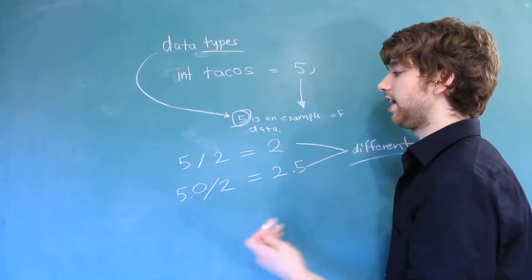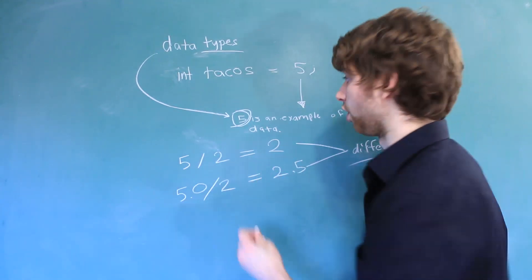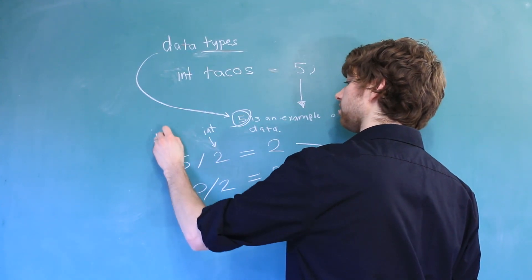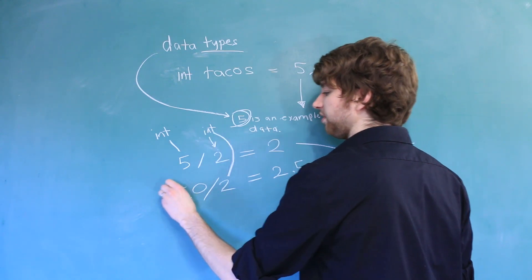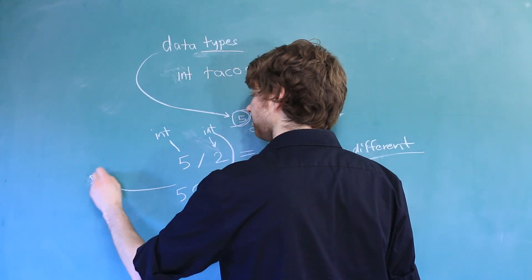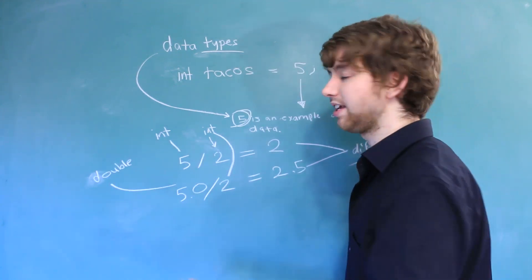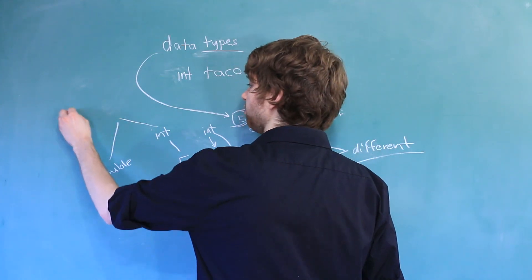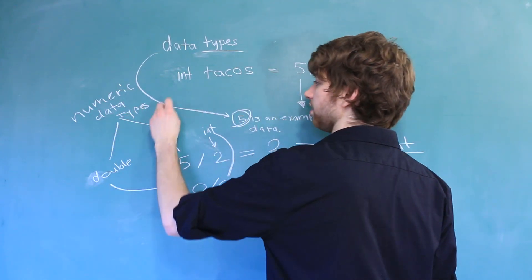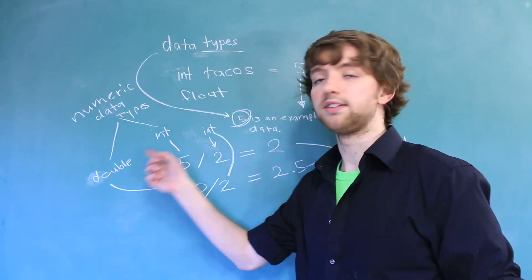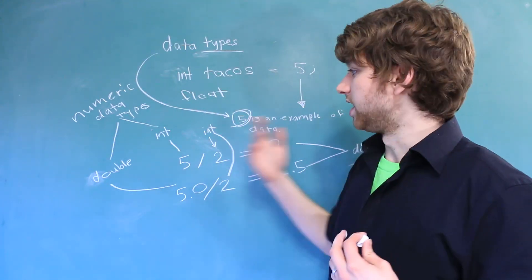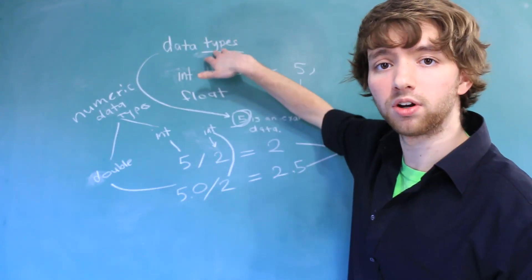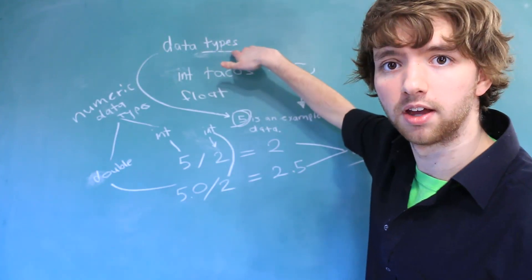And the reason they are different is because the data we are working with has different data types in each of these situations. The 2 is an integer, the 5 is an integer, but the 5.0 is a double. So far you can see that there are differences even in the numeric data types. The other one you should know is called float. But starting off knowing int and double is very helpful. The data type of the data changes the results. So you can see that data types are very, very important when it comes to programming.